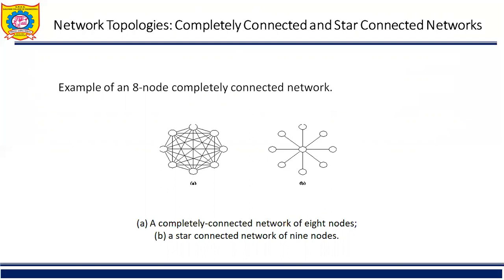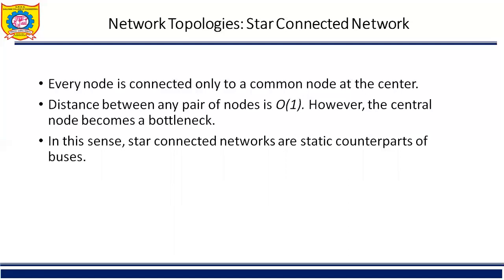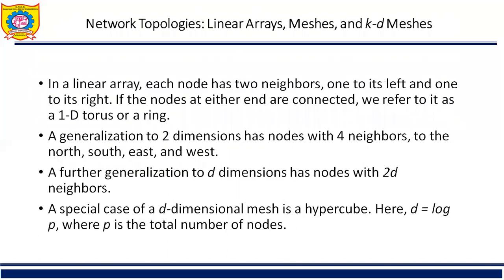Figure B shows a star connected network for 9 nodes. In a star connected network, every node is connected only to a common node at the center, which is a bottleneck — if the center node fails or goes under maintenance, the entire network topology can collapse. That is the drawback of the star connected network. The star connected network is the static counterpart of the bus topology.